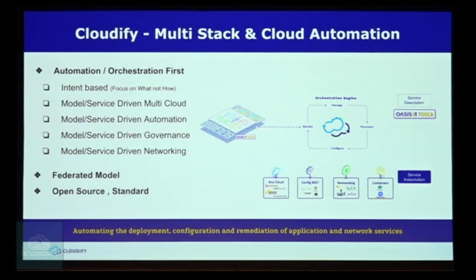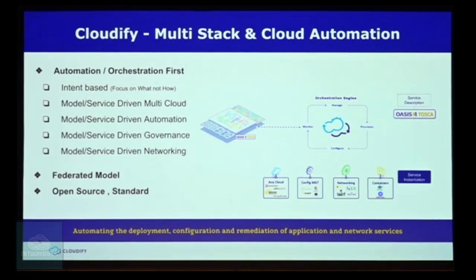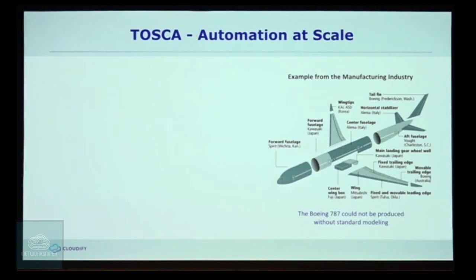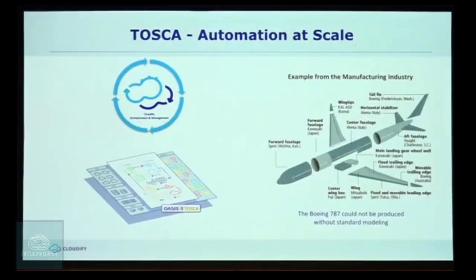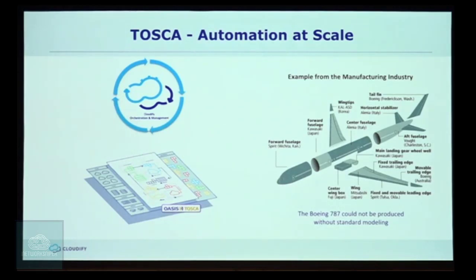When you come to the edge, things become more complicated because sometimes the edge doesn't have connectivity to the master orchestrator, so the edge should work autonomously. You need copies of your orchestration both at the master and the edge. When there is no connectivity - think about ships or airplanes - you still need to orchestrate the lifecycle operations of workloads there. We are open source. The key challenge is that our parts are very dynamic - everything changes so fast, and we need to orchestrate at scale in very dynamic environments.